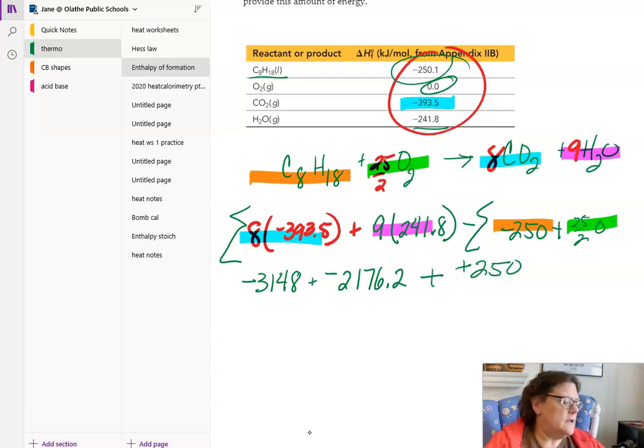And once we put all of that together, negative 3148 minus 2176.2 plus 250 gives us negative 5074.2 kilojoules for 1 mole. Alright, this is the energy for 1 mole.